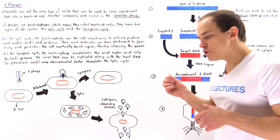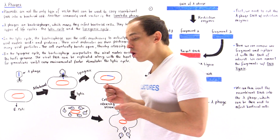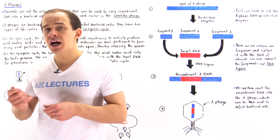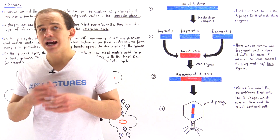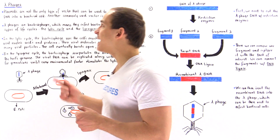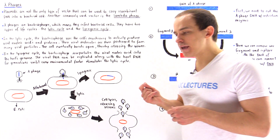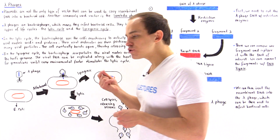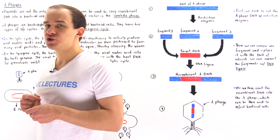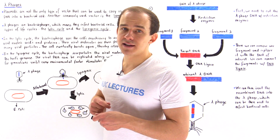We can use plasmids as vectors, or we can also use another type of vector — another type of carrier known as a lambda phage. A lambda phage is a special type of bacteriophage that infects E. coli cells.